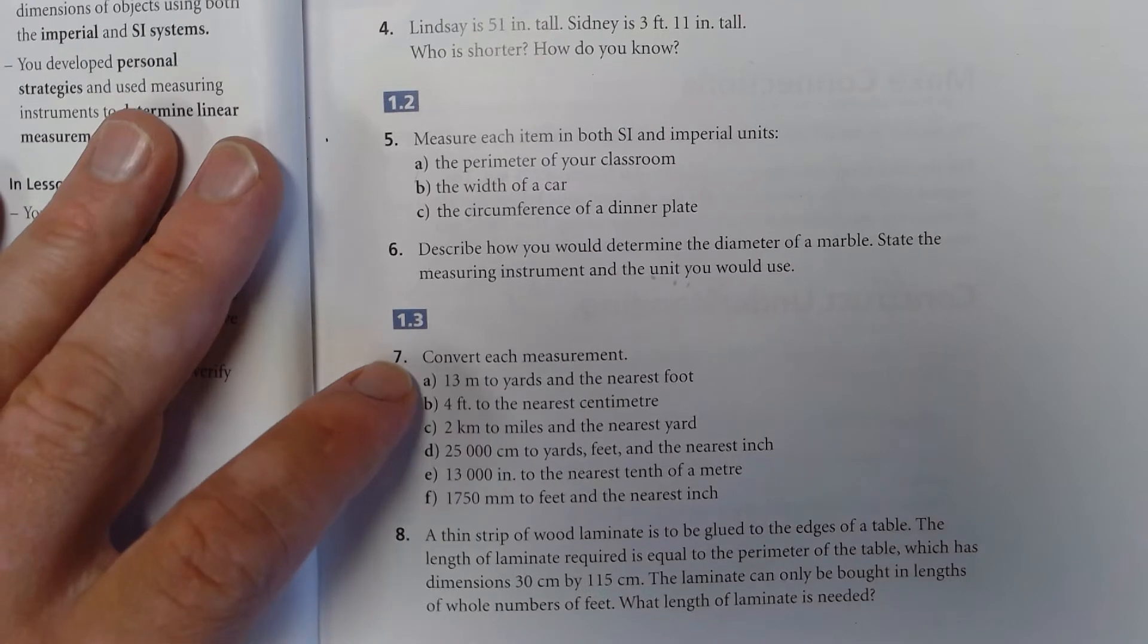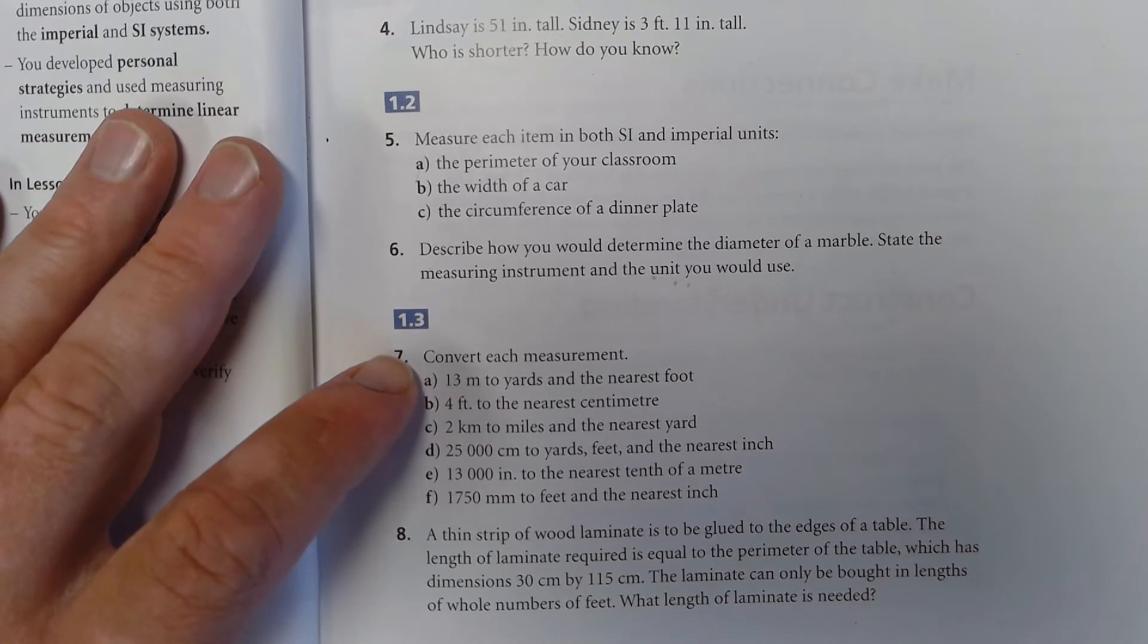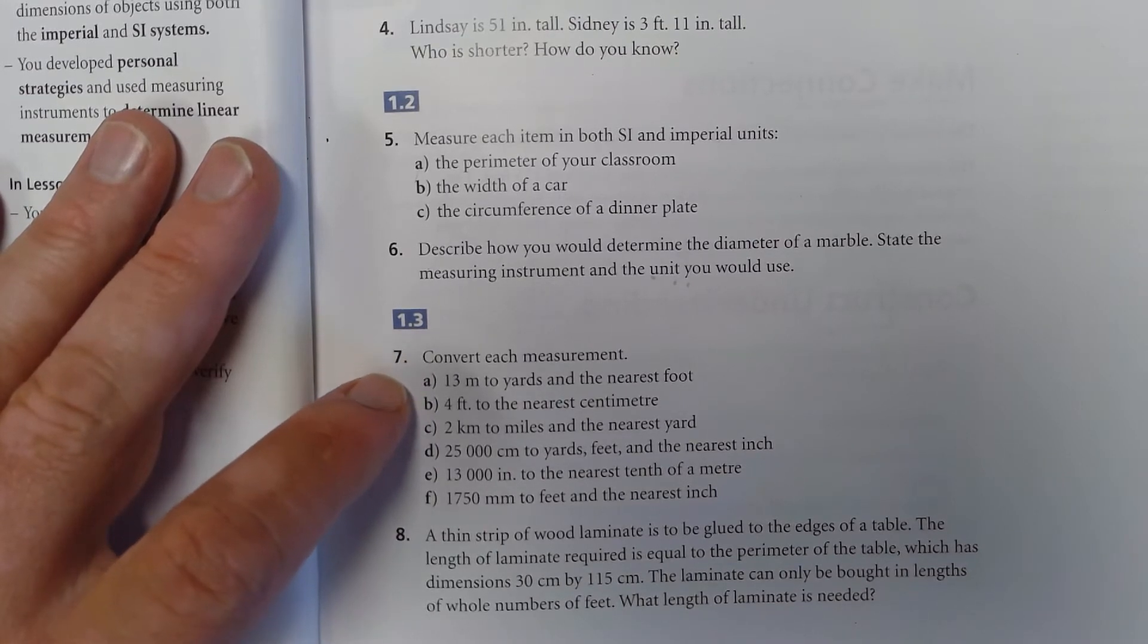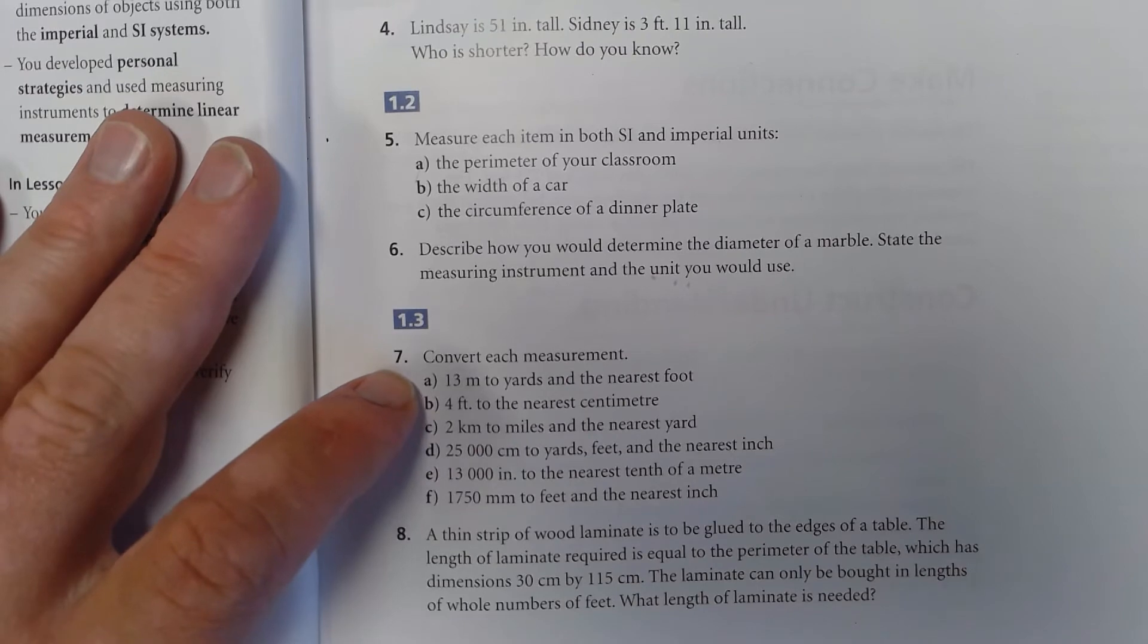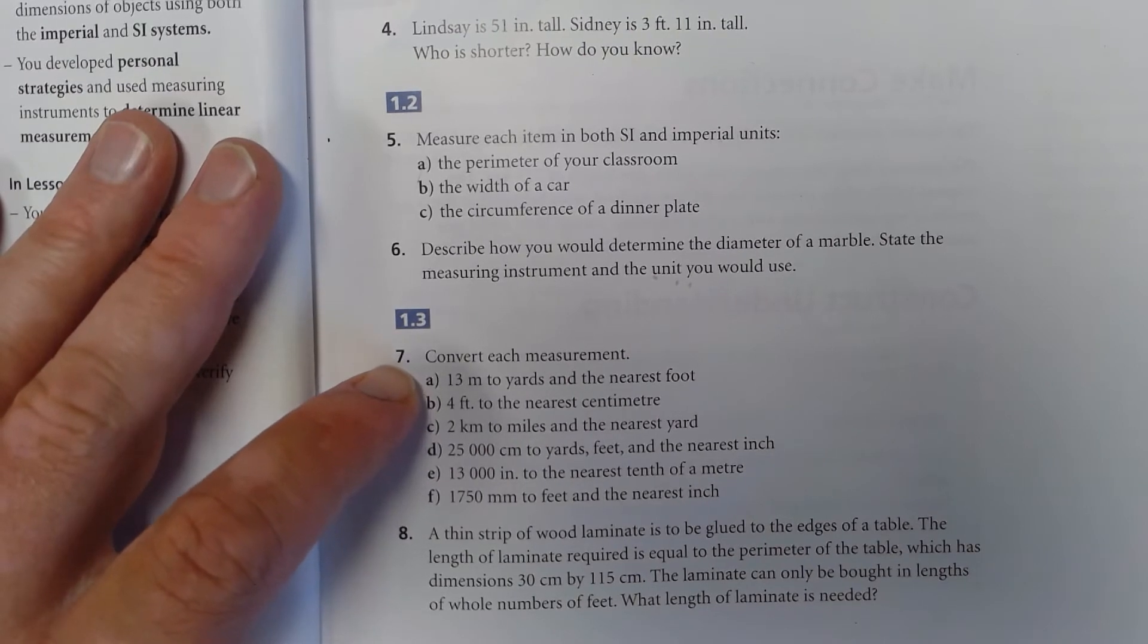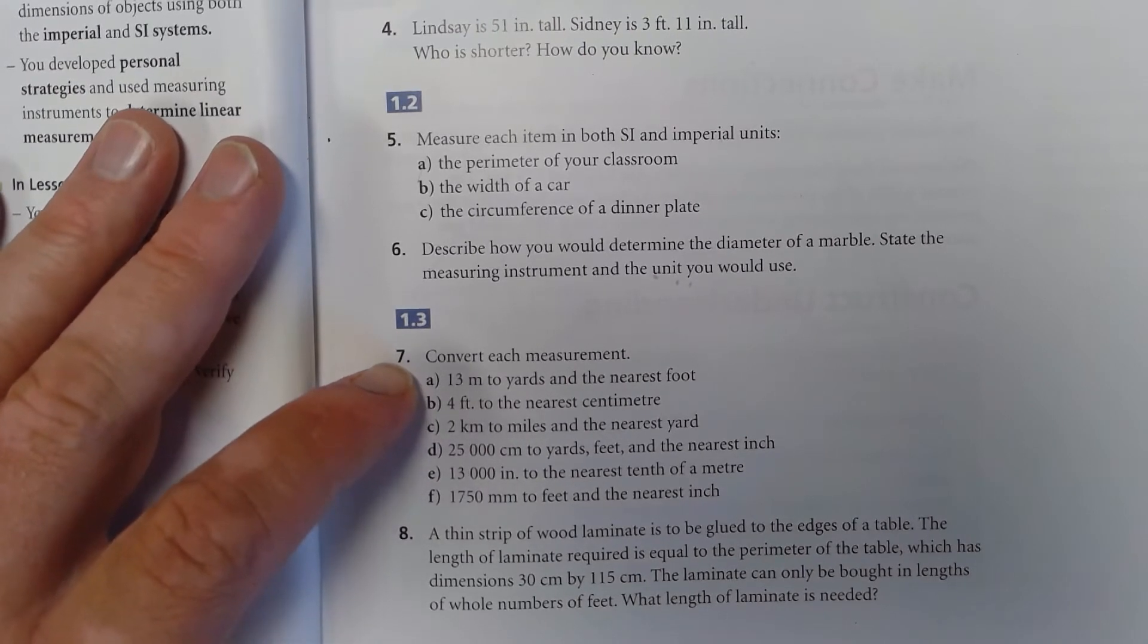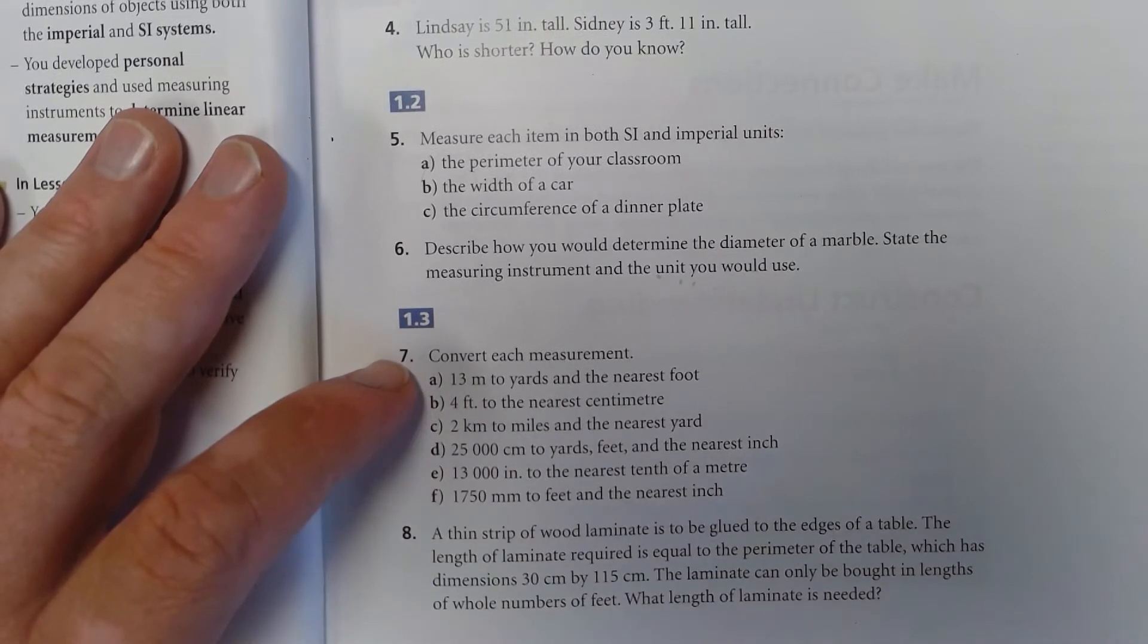Moving right along, converting measurements is similar to what you did above, just a step further. Now we're converting between the two systems. Three meters to yards and the nearest foot, so convert 13 meters into yards and then whatever amount is left over will be feet.